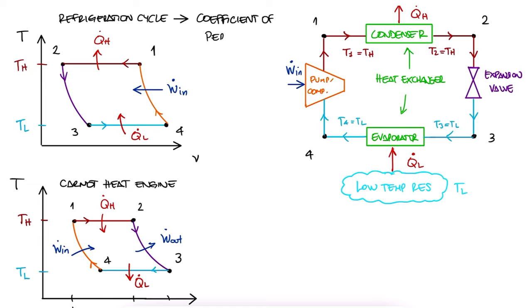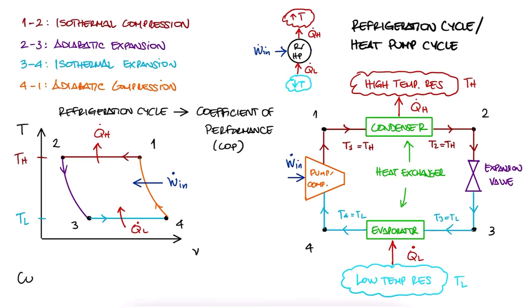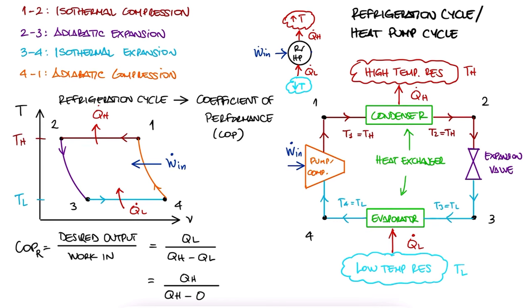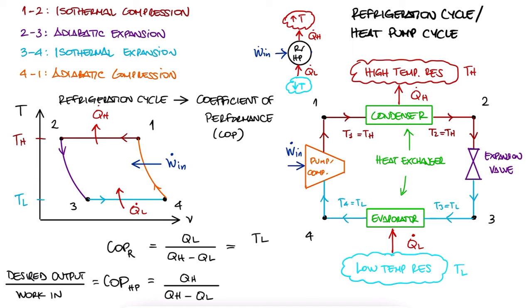And finally, remember we used coefficients of performance as opposed to efficiency for these. Since the COP was what we want to obtain over the work in, the COP was QL over QH minus QL for refrigeration cycles, and QH over QH minus QL for heat pumps. For a Carnot cycle, since the ratio of the heats is the same as the ratio of the reservoir temperatures, we can write these in terms of temperatures. Let's look at an extremely easy example where we use what we learned here today, and if you want to check out more complex and much more interesting examples, make sure to check out the links in the description below.